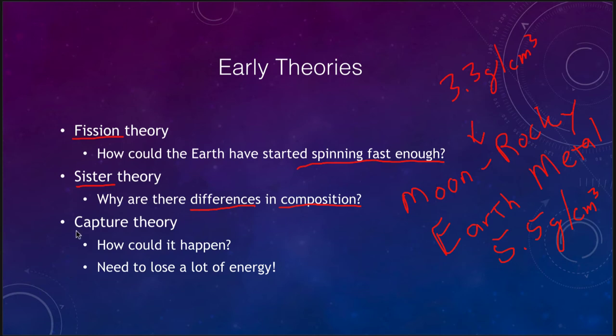A third theory that was once considered is the capture theory. It's difficult because how could something get captured? It is very difficult for one object just to happen to capture another gravitationally. We can certainly do it when we send objects into orbit to explore another planet, but to have it randomly happen — coming at just the right speeds and velocities to get into a circular orbit — is very difficult.